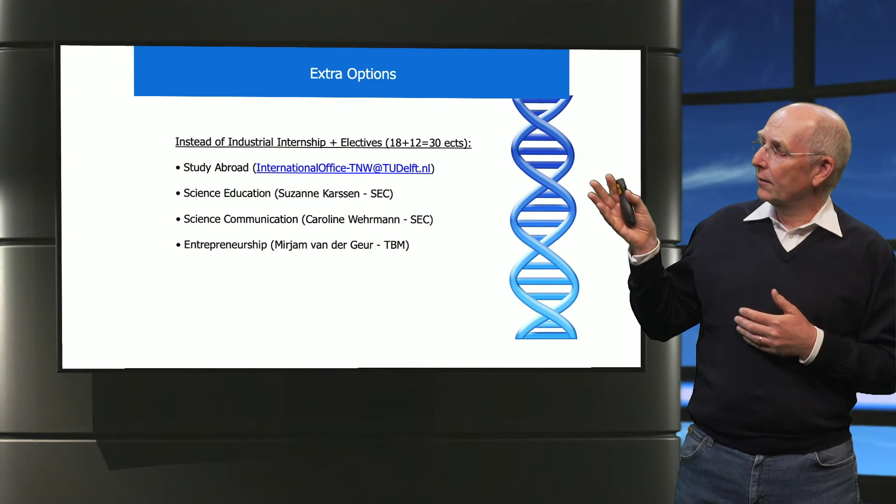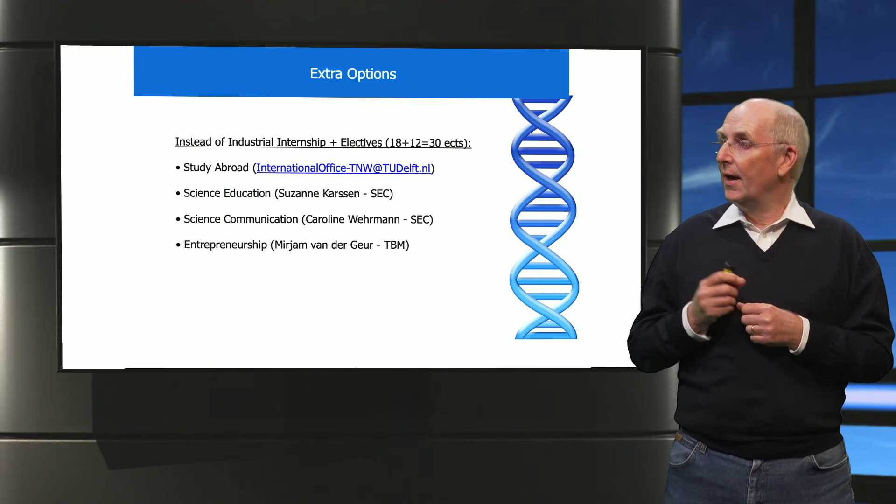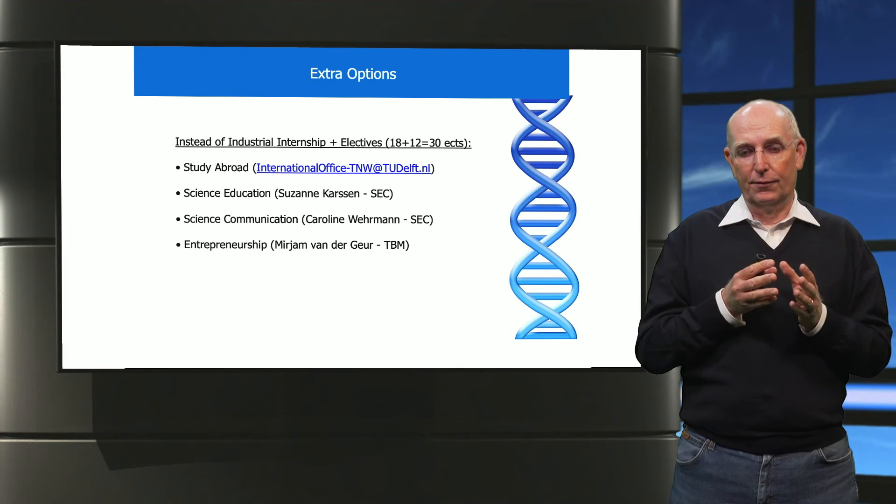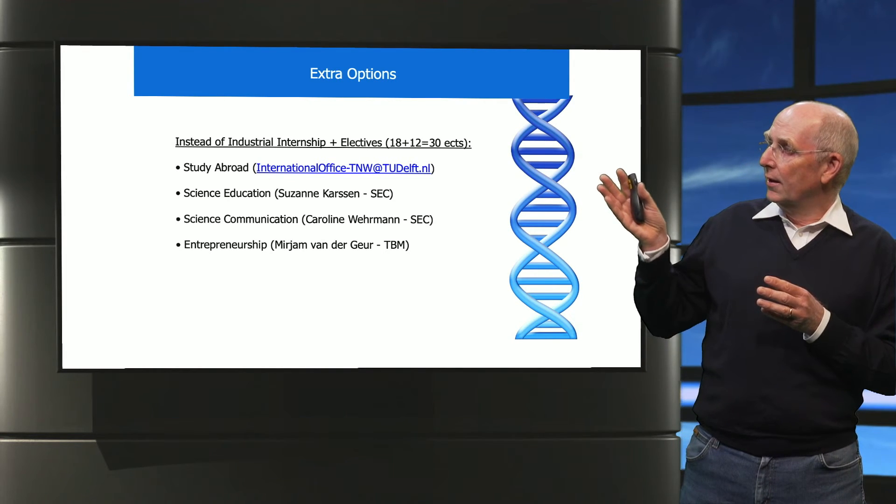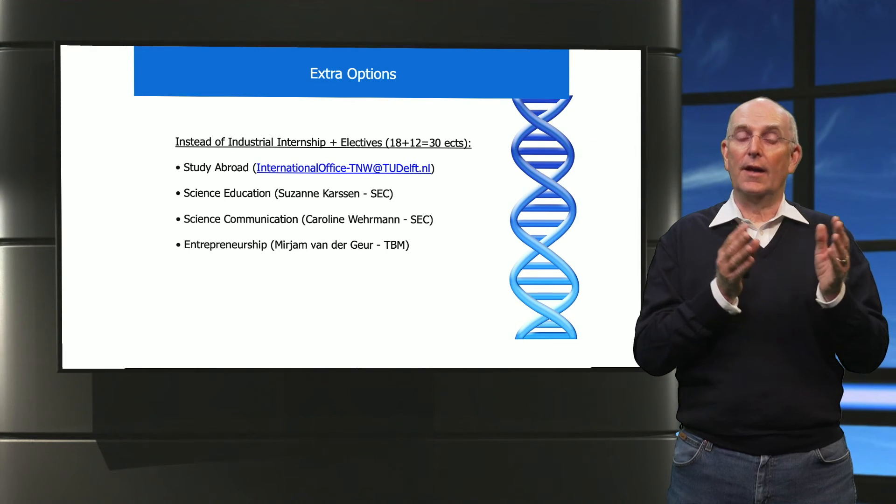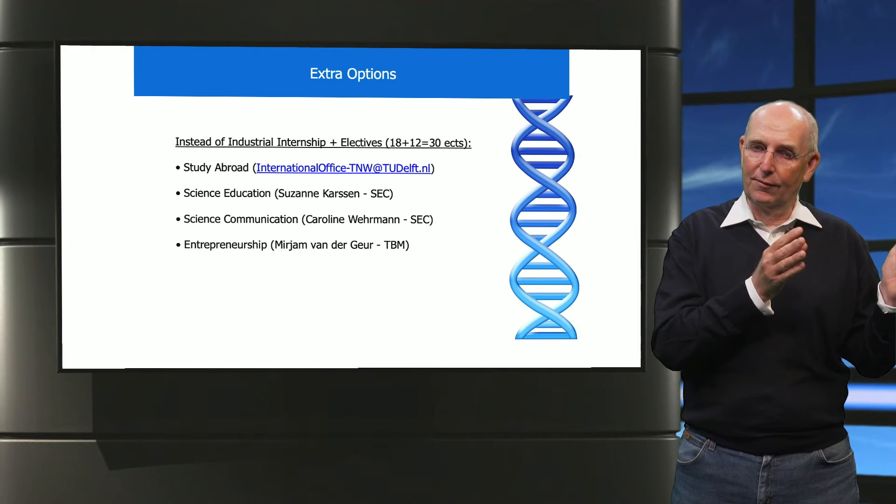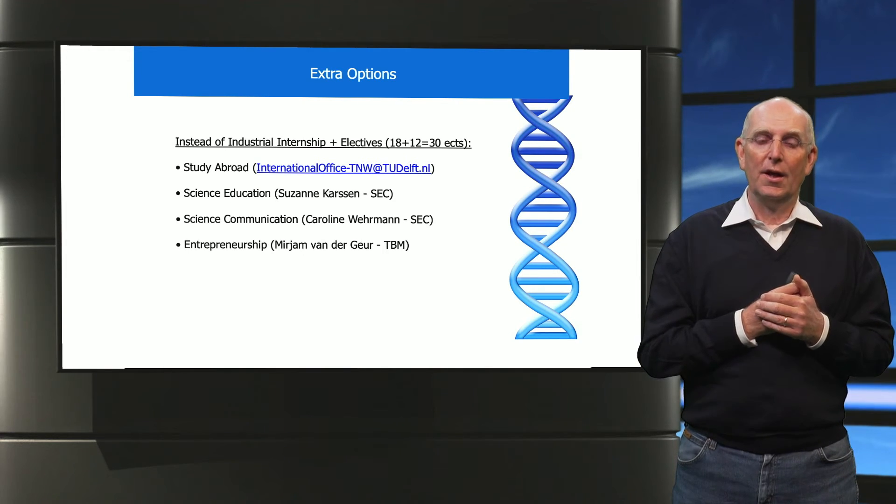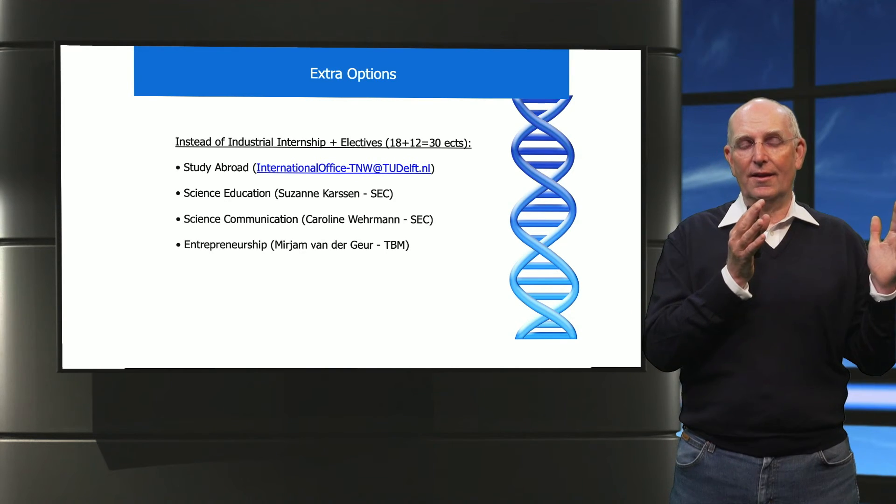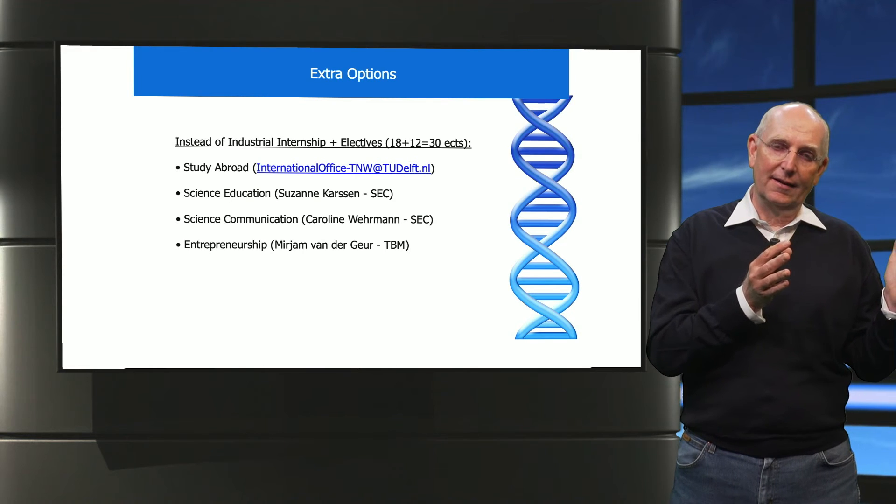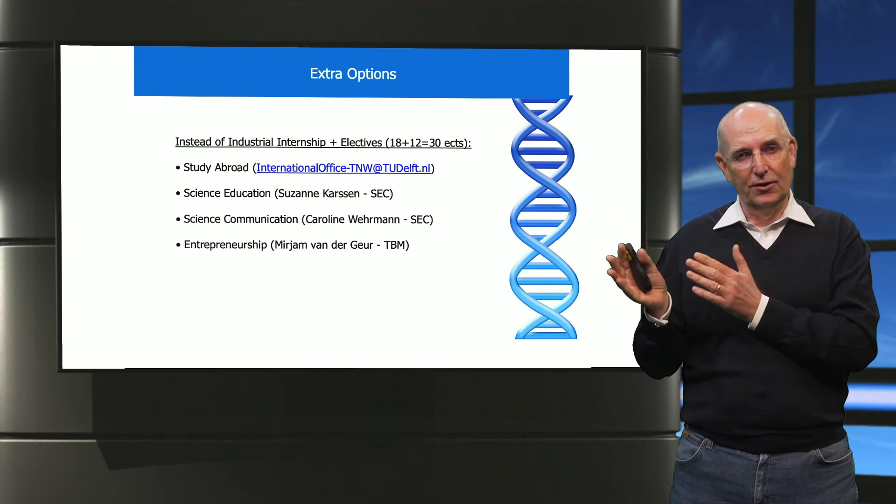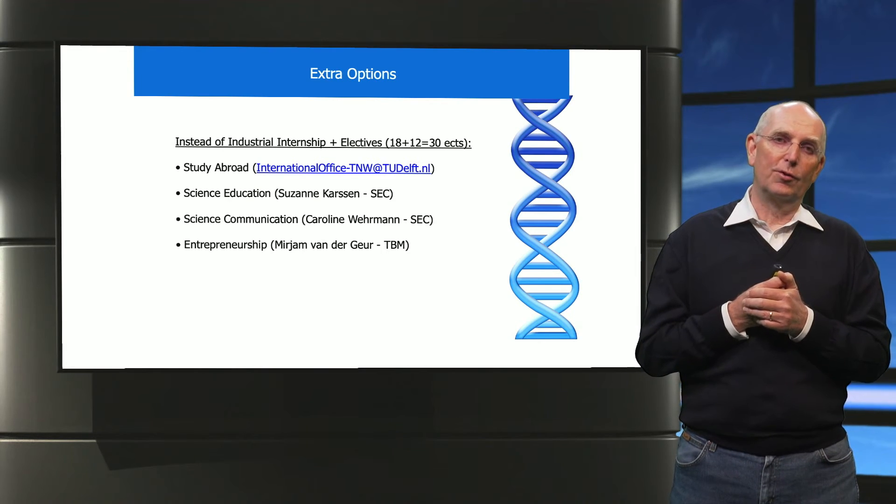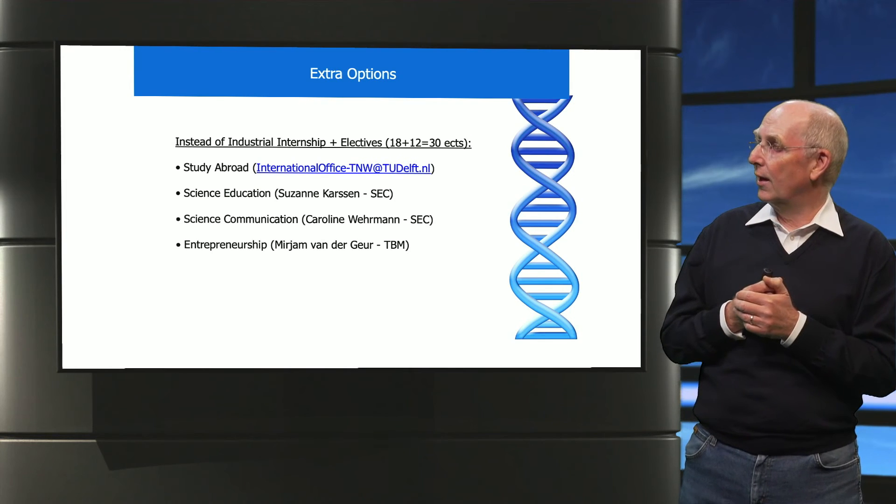Having looked at all of this, of course you would like to know whether there are extra options, and yes indeed there are. Instead of your electives and industrial internship, you can go abroad—you can follow 30 ECTS of your education abroad. You can have an annotation in the area of education and in that case you can also become a teacher, or you can follow an additional education on entrepreneurship in order to become more enterprising and possibly even found your own company.